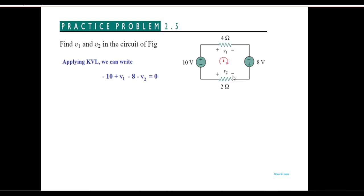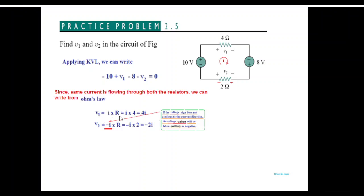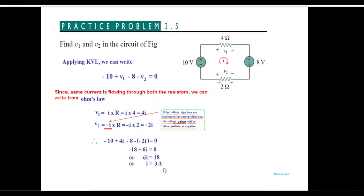The current touching the other end makes that end positive, which is marked negative, therefore V2 has to be written with a negative sign. According to the current, it will be positive on one side, so when writing V2 we write it with a negative sign: V1 equals 4i and V2 equals negative 2i. Plugging these into the KVL equation, current i equals 3 amperes. Therefore V1 equals 4 times 3 equals 12 volts, and V2 equals negative 2 times 3 equals negative 6 volts.